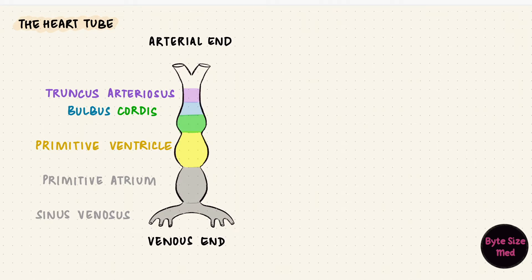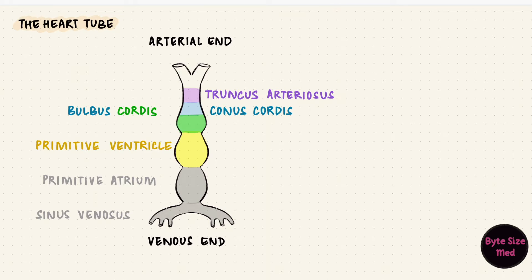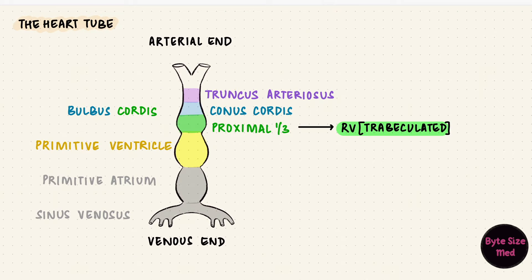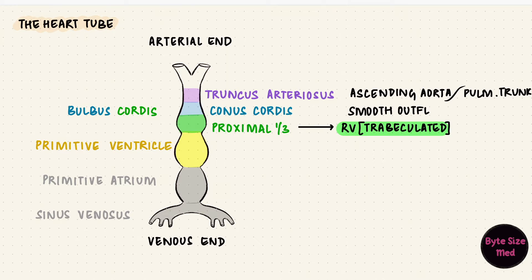The distal third of the bulbus cordis is the truncus arteriosus. The middle third is the conus cordis. The proximal third doesn't have a special name, but it contributes to the formation of the trabeculated part of the right ventricle. First, let's see how the outflow tracts develop — that's the ascending aorta, the pulmonary trunk, and the smooth outflow portions of the two ventricles. The structures we need for that are the truncus arteriosus and the conus cordis.